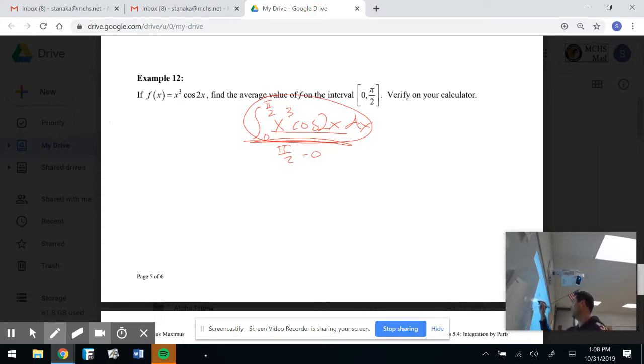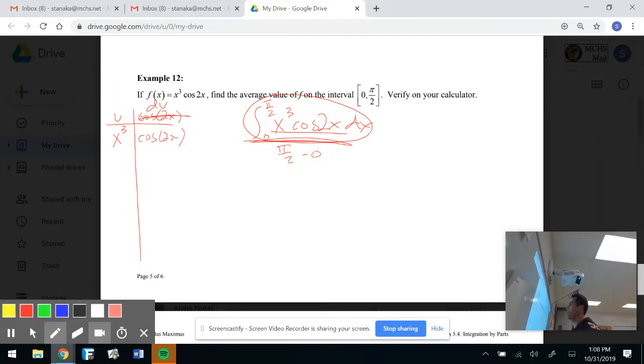So we do a little LIPET. There's no logs. There's no inverse trig. So my u is going to be x³. It's going to be the polynomial. That comes third in that lineup. And trig comes last, right? So that's going to, whoops, that's dv. So dv are those guys right there. Okay, let's go.